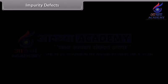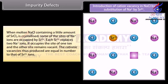Impurity defects: When molten NaCl containing a small amount of SrCl₂ is crystallized, some sites of Na⁺ ions are occupied by Sr²⁺ ions. Each Sr²⁺ replaces two Na⁺ ions — it occupies the site of one ion and the other site remains vacant. The cationic vacancies thus produced are equal in number to the Sr²⁺ ions.